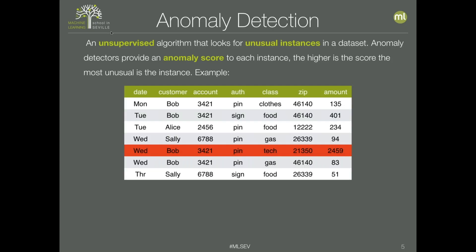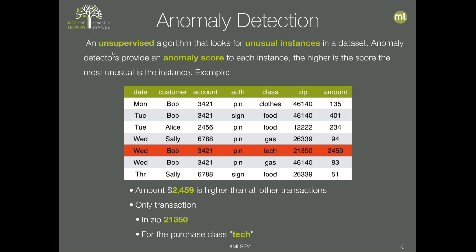Anomaly detection is an unsupervised algorithm that looks for unusual instances in the data and provides an anomaly score to each instance. The higher the score, the more unusual the instance. Looking at a bank transactions dataset, the red transaction could be defined as an anomaly — it has a very high amount and is the only transaction with that zip and class.